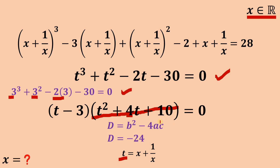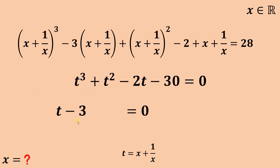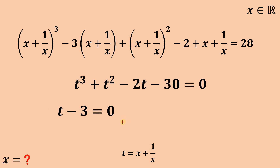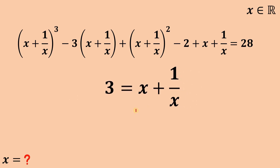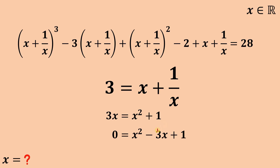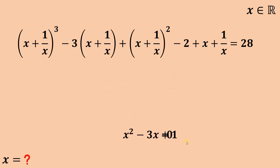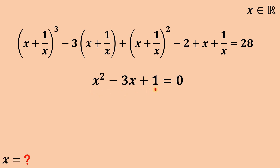So the only equation that gives us a real value of t is t minus 3 equals 0, or t equals 3. Since t equals x plus 1 over x, we replace t with 3 and solve for x. Multiplying all terms by x, we get x squared plus 1 equals 3x. Rearranging and equating to 0, we have x squared minus 3x plus 1 equals 0. We'll use the quadratic formula to find x, since this is not factorable.